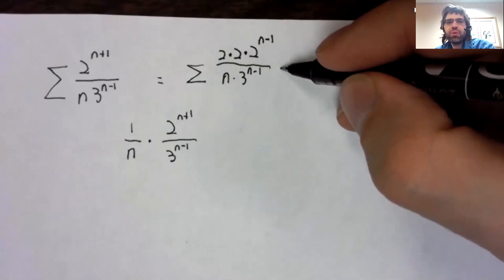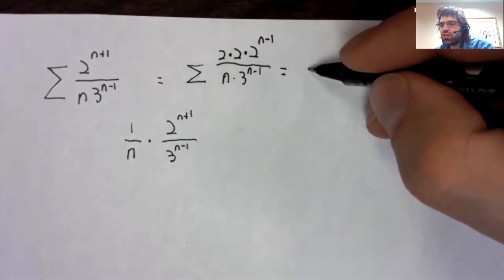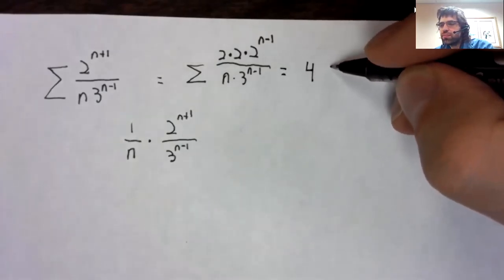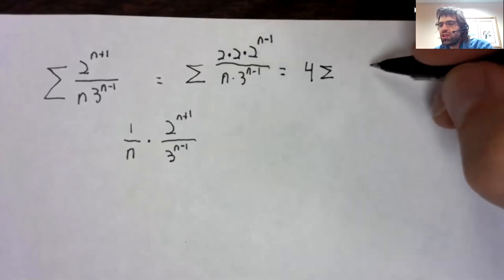Well, this numerator could be rewritten as two times two times two to the n minus one.